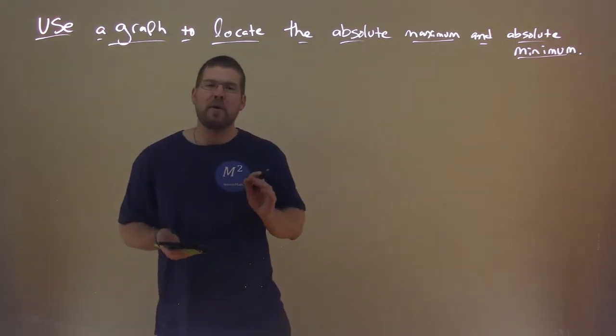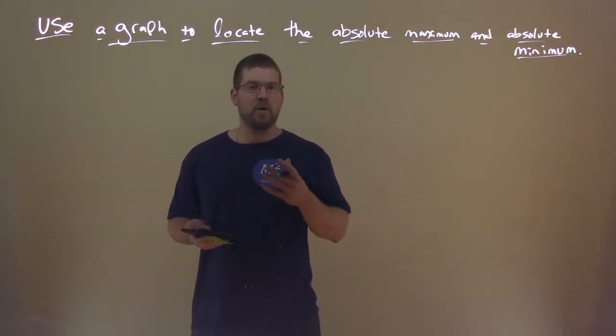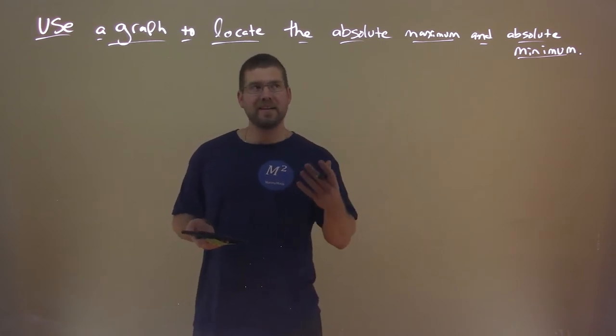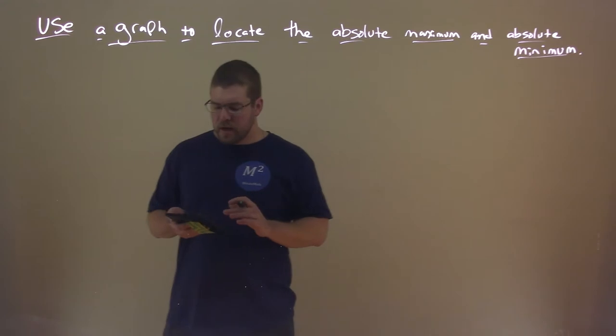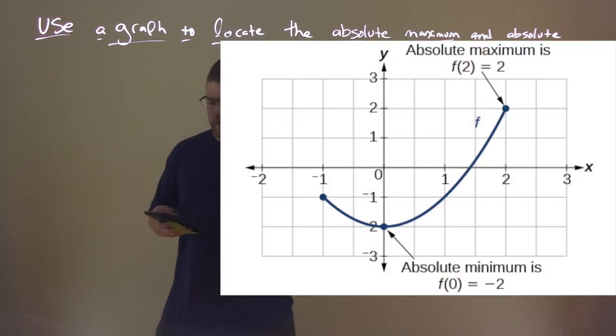Sometimes a value will fall into both of these categories, where it will be a local maximum and the absolute maximum. So that is possible. But here we can see where it's a little different on our graph.